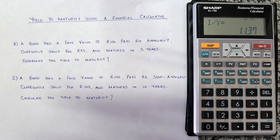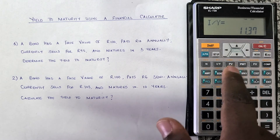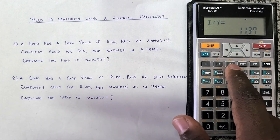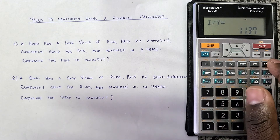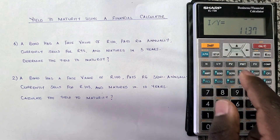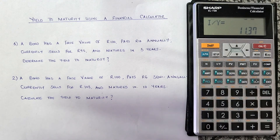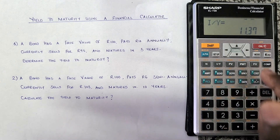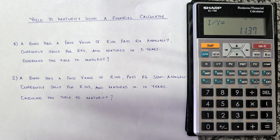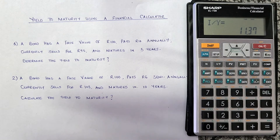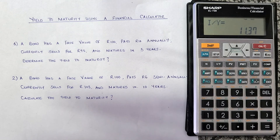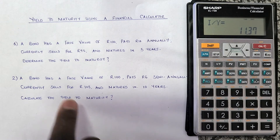To compute, I press COMP and then I/Y, and there we have it — the yield to maturity is 11.37%. An important note: the answer you enter for PV must be a different sign than PMT and FV. If PV is negative, then PMT and FV must be positive. If PV is positive, then PMT and FV must be negative — otherwise it will give you an error.